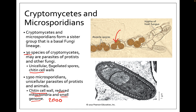The cryptomycetes do have flagellated spores, meaning the spores have flagella that they use to swim. The microsporidians, however, do not have flagellated spores — they may have lost them somewhere along the line. They do, however, have a harpoon-like organelle that they use to stab and then invade other organisms so that they can parasitize that host.